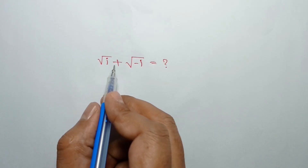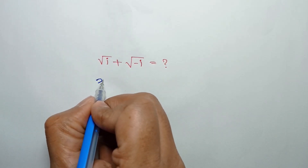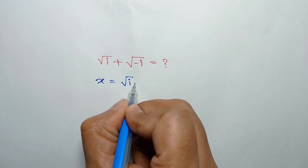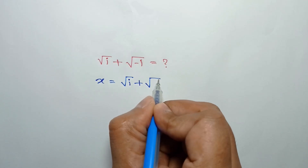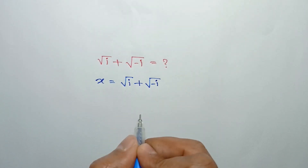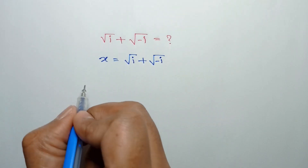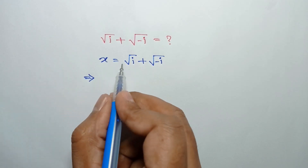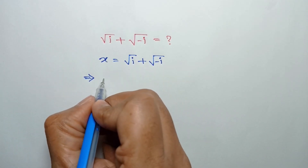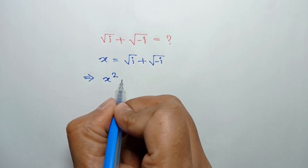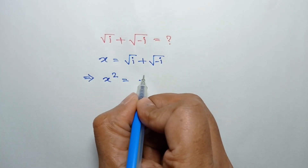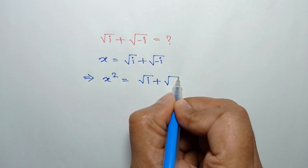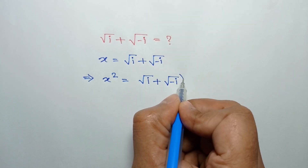Let's consider x is equal to square root of i plus square root of negative i. Taking square to both sides, we can write x squared is equal to square root of i plus square root of negative i, whole square.